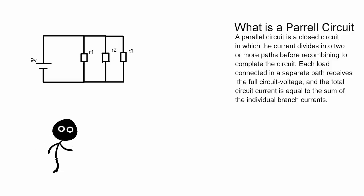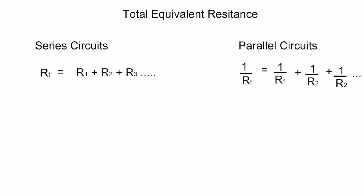And the total circuit current is equal to the sum of the individual branch currents. You look confused Quinn, let's see the formulae for the total equivalent resistance.